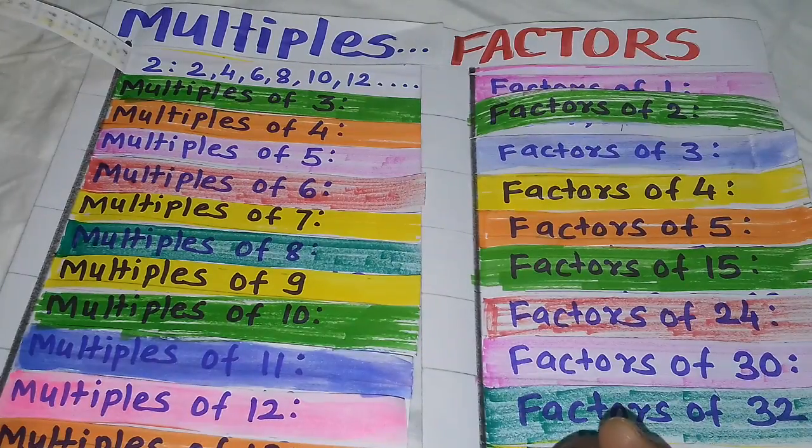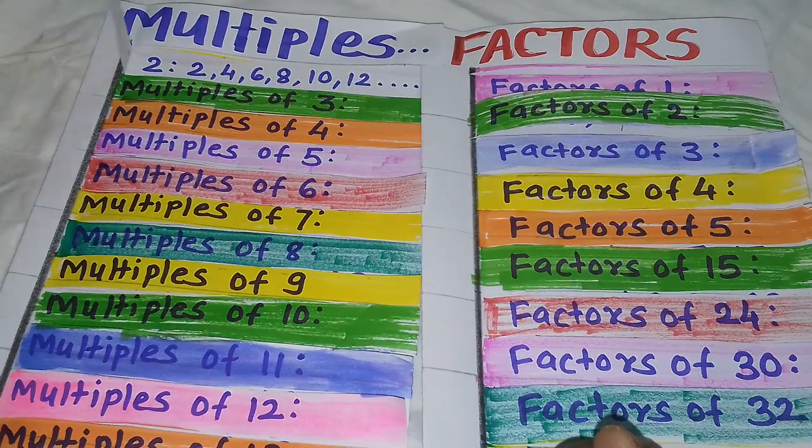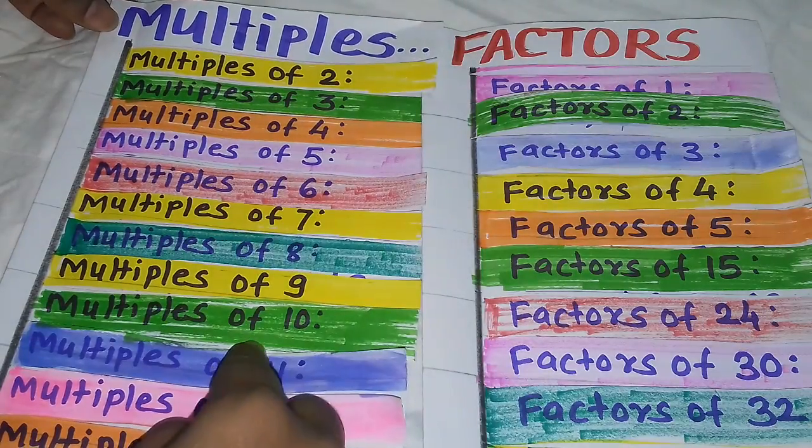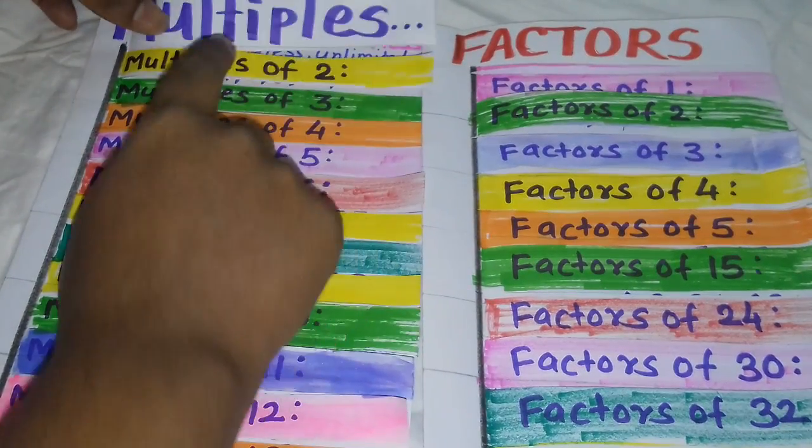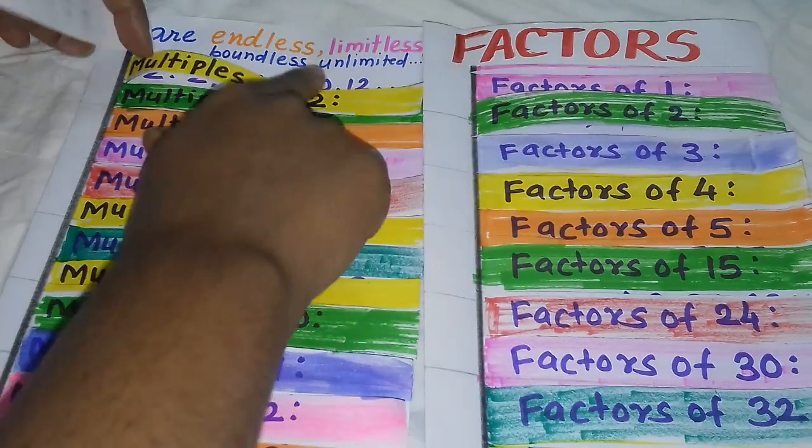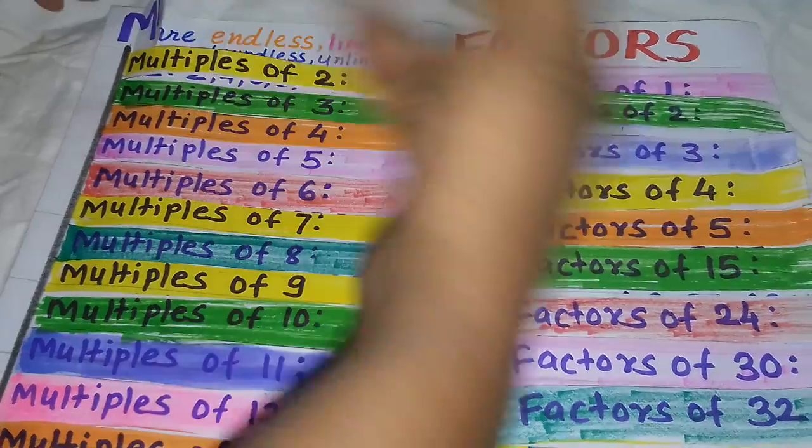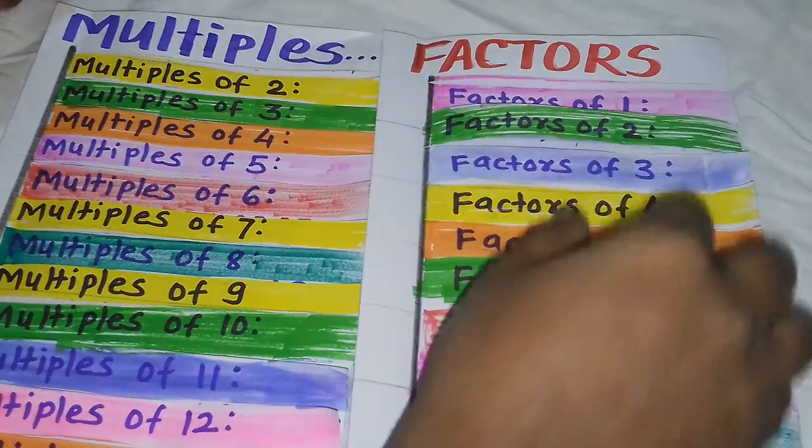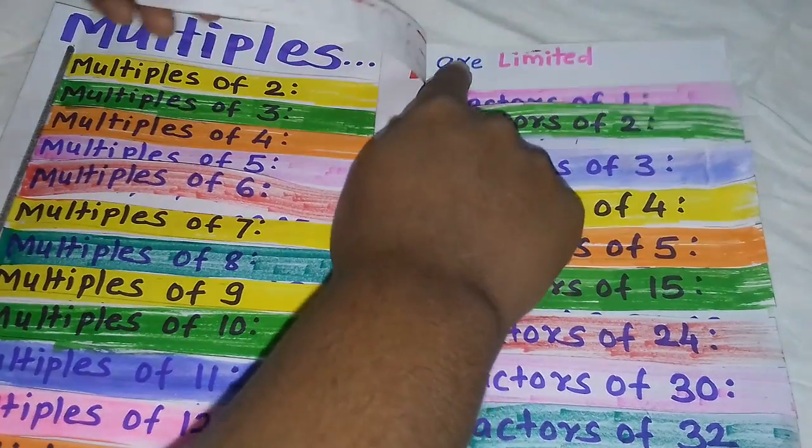Multiples are the numbers which come in the number's table, and multiples are endless, limitless, boundless, or unlimited. Multiples are unlimited, and on the contrary, factors are limited.